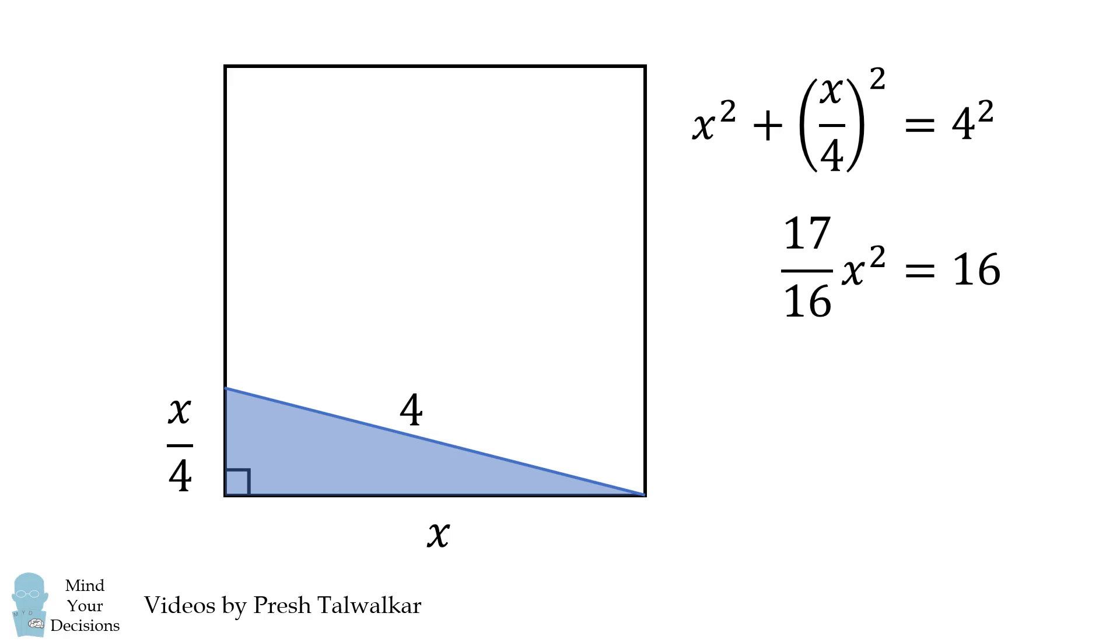This means 17 over 16 X squared is equal to 16. And for positive X, we have a value that X is equal to 16 all over the square root of 17.